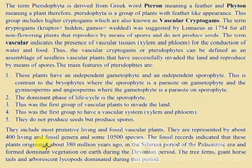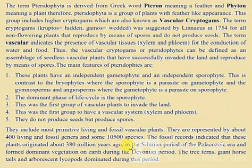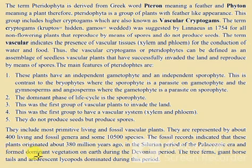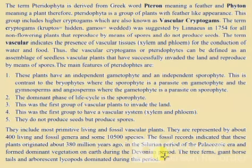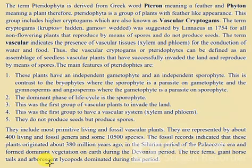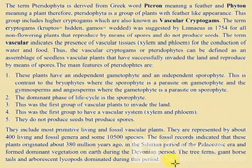They are represented by about 400 living and fossil genera and some 10,500 species. Fossil records indicate that these plants originated about 380 million years ago in the Silurian period of the Paleozoic era and formed the dominant vegetation on Earth during the Devonian period. Tree ferns, giant horsetails, and arborescent lycopods dominated during this period.